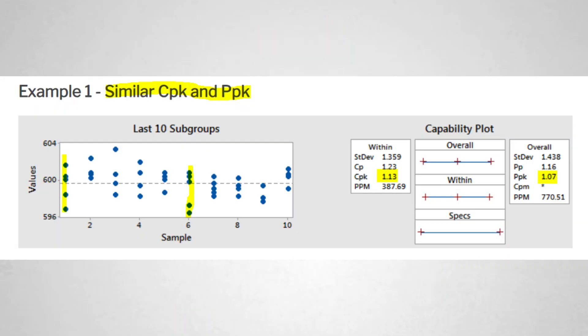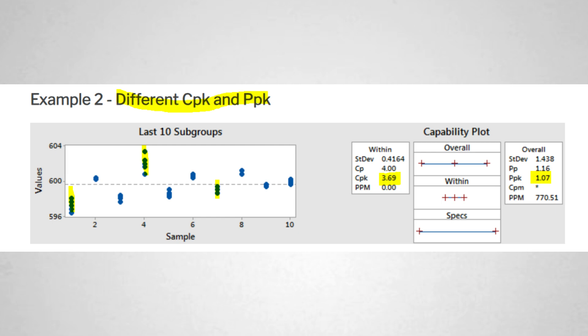Statistics is all about data, and if we manage the data, it can give different kinds of results. In the first case, all subgroups appear identical, which is why CPK comes out to 1.13 while PPK comes out to 1.07 — almost similar. But when we manipulate the same data by exchanging values across different subgroups — keeping the overall data the same — we see something very interesting: the subgroups become very close to each other, and CPK shoots up to 3.69 while PPK remains at 1.07.